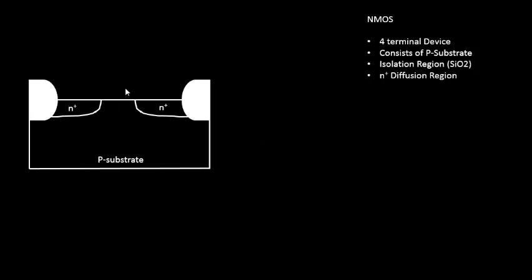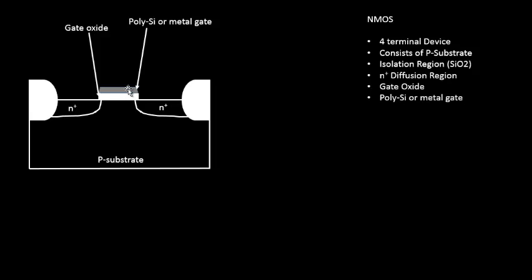Next, at the center area where we have kept open space, we build the gate. We actually grow a gate oxide over here, and this oxide acts as an isolation element between the metal gate above it and the substrate below. When we say NMOS, it stands for N-channel Metal-Oxide-Semiconductor. This is where the name comes from: the metal is the gate, the oxide is the gate oxide, and the semiconductor is the substrate. We now have the N+ source and drain diffusion regions and the gate oxide structure.